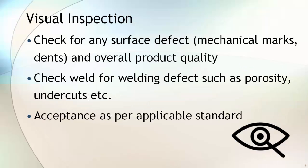Visual inspections are conducted on fittings to check any surface imperfections. Both the fitting body and weld are checked for any visual defects such as dents, die marks, porosity, undercut, etc. Acceptance of these defects is as per the applicable material standard.